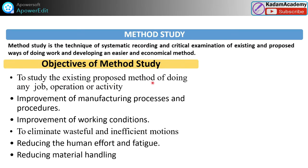Some objectives are defined here. The first objective is to study the existing and proposed method of doing a job, operation, or activity. After that, improvement of manufacturing processes and procedures by observing them — that must be your objective under method study. Also, the improvement of working conditions, and the elimination of wasteful and inefficient motions. Whatever motions workers are doing — if some are inefficient, you can reduce them by observing and modifying them with standards.